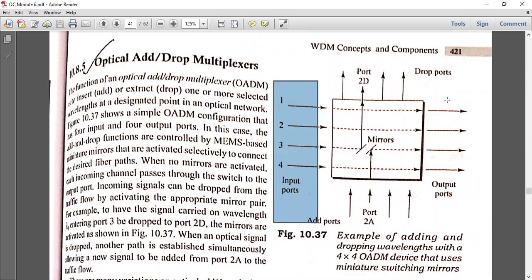A particular wavelength can be selected for adding or dropping. Multiple paths can be created. The path in the middle goes to the 2D port where the wavelength is dropped.